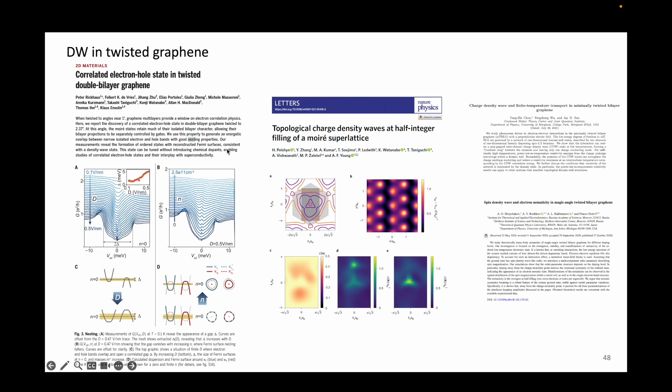This work on twisted double bilayer graphene argues on the formation of density waves due to the nesting condition. The middle work on twisted monobilayer graphene argues on the formation of charge density waves as a result of fractional charge filling in the moiré bands, which leads to the breaking of the translational symmetry.